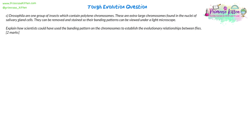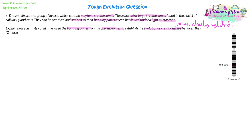Now we've got a different part of the question, still related to the flies. Drosophila are one group of insects which contain polytene chromosomes — extra large chromosomes found in the nuclei of salivary gland cells. These can be removed and stained so that their banding patterns can be viewed under a light microscope. The question asks: explain how scientists could have used the banding pattern on the chromosomes to establish the evolutionary relationships between the flies. This is a chromosome question, but really it's an evolutionary relationships question dressed up in different wording. Evolutionary relationships are about determining how closely related organisms are to each other.